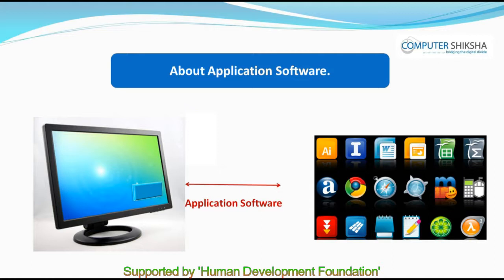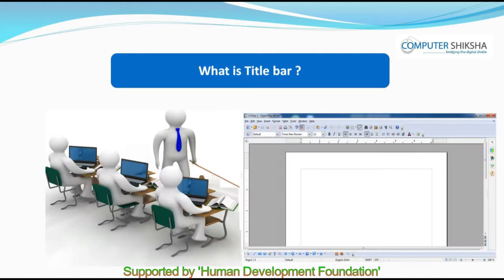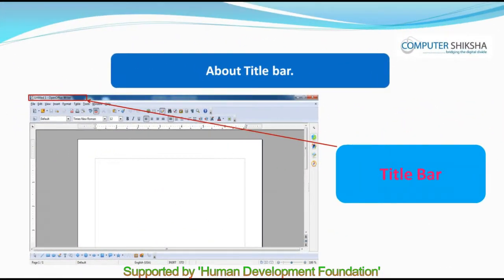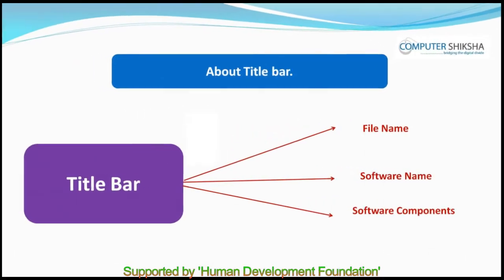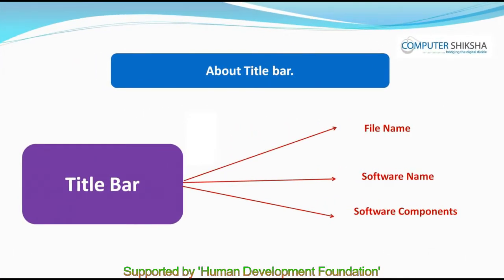Or we can simply say that software is a program which we cannot touch, however we can see the program and make use of it. What is Title Bar? The Title Bar shows your file's name and the component of Writer that you are using. The Title Bar can be seen right on top of our page.